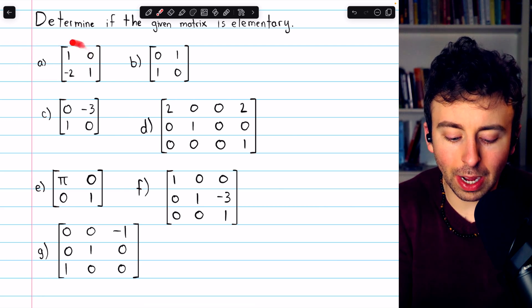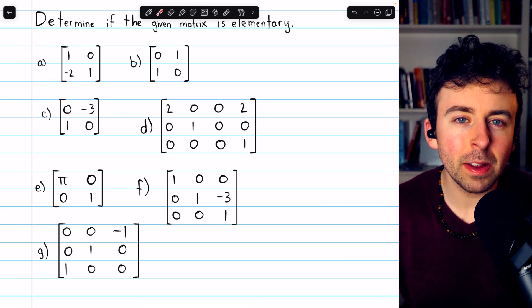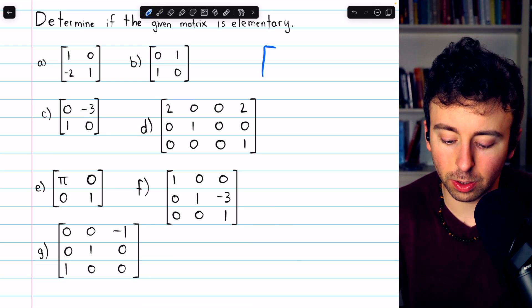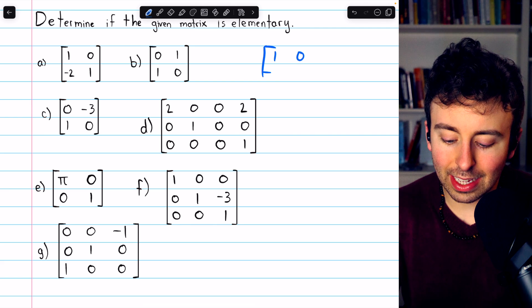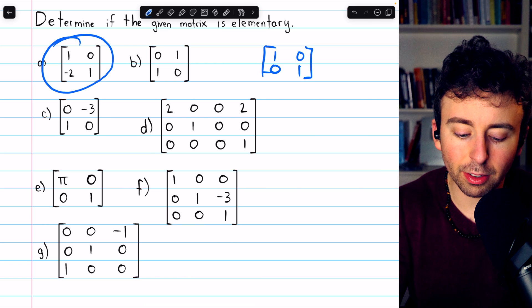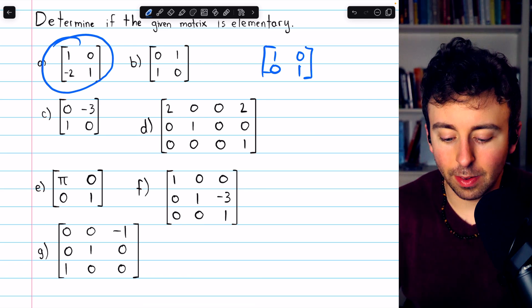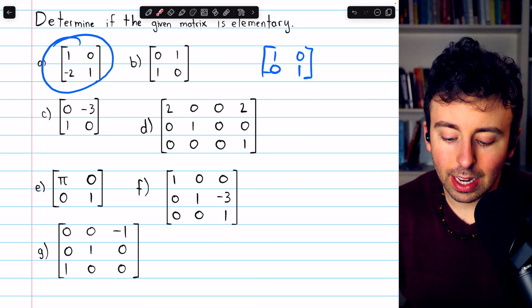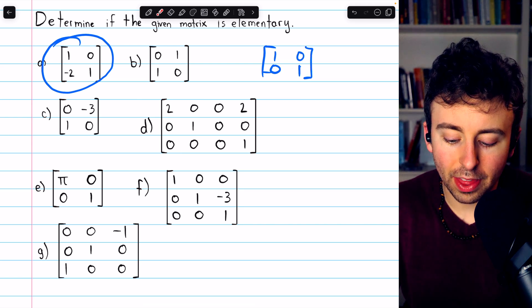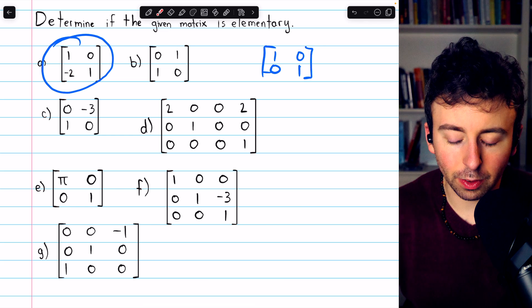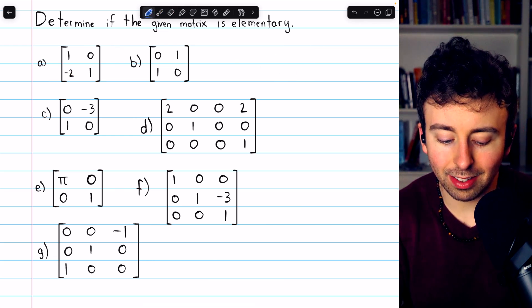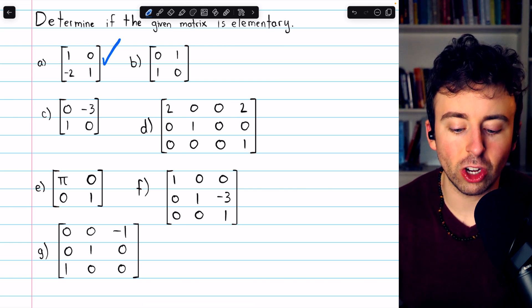Beginning with this 2x2 matrix A, is it elementary? Can it be obtained from the identity matrix by performing a single row operation? In this case, the answer is yes. It's pretty easy to see that the way we get this matrix from the identity is by adding negative 2 times row 1 to row 2. That will change this 0 to a negative 2 as desired. So the answer for A is yes, it is elementary.